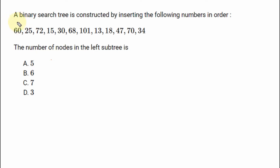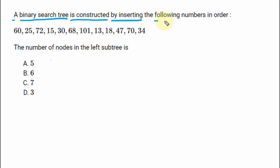Hello everyone, my name is Ankit Varma. This is a question from Data Structures. A binary search tree — we know that a binary search tree is a tree on which the left hand side has the lesser value and the right hand side has the greater value — is constructed by inserting the following numbers in order.